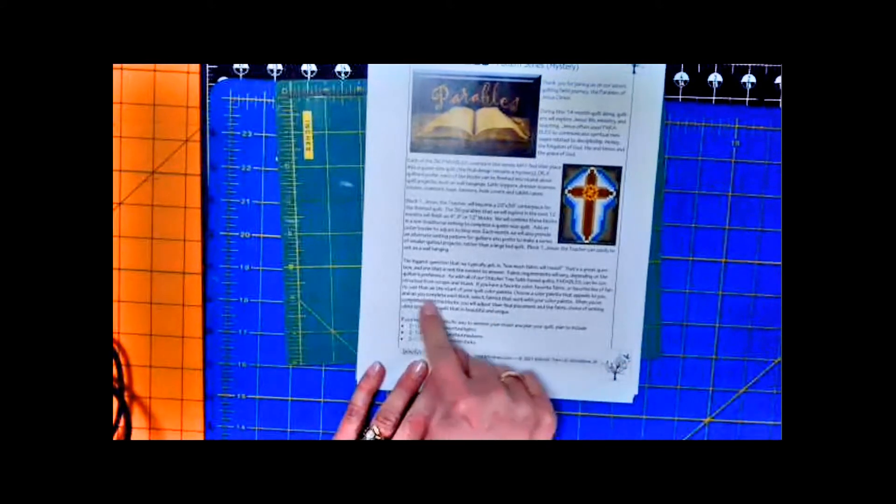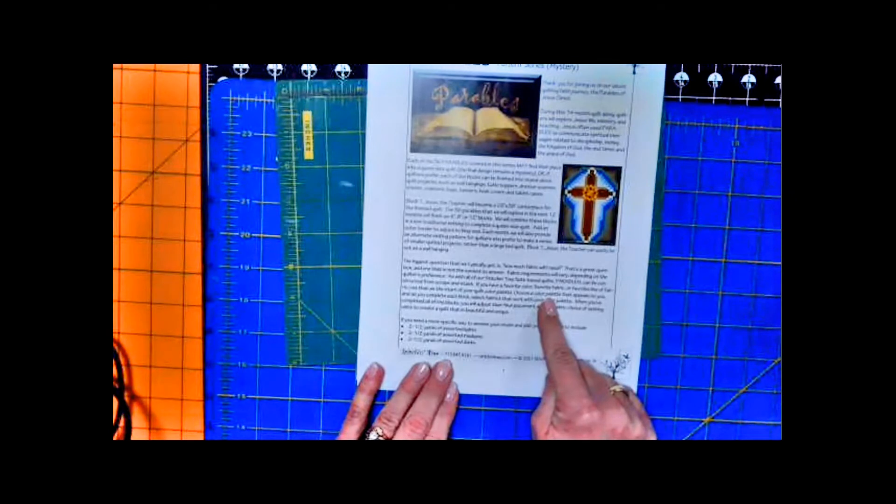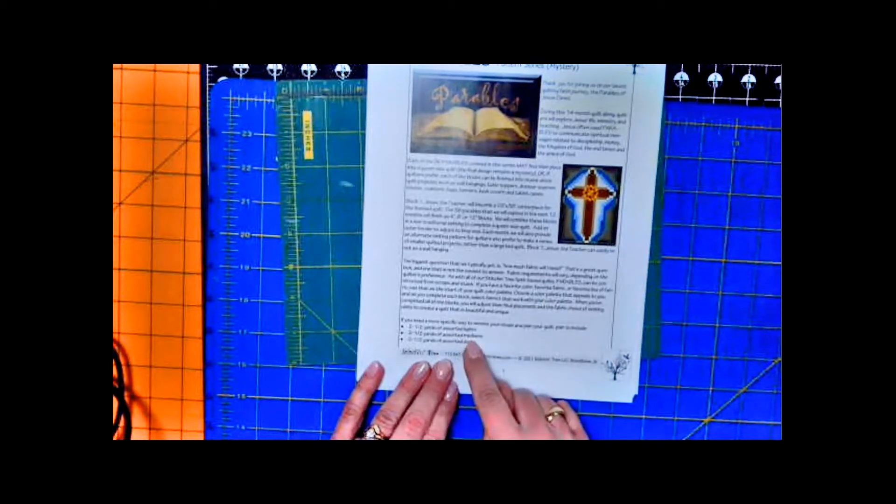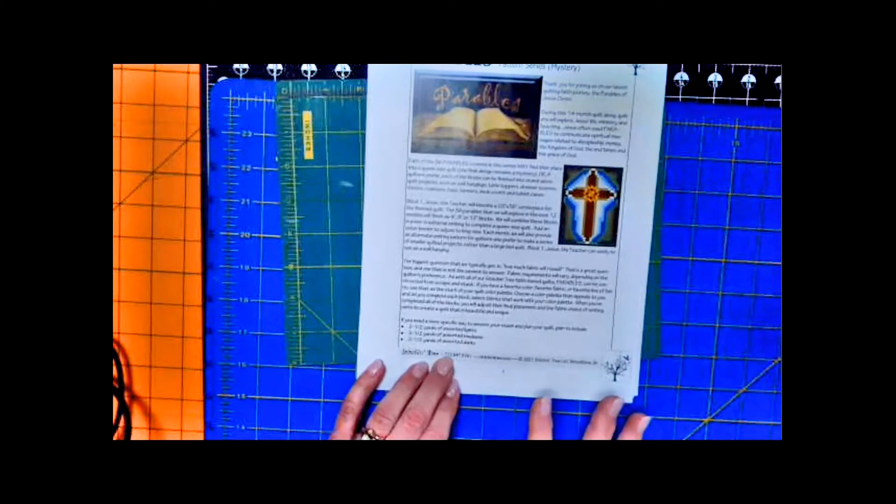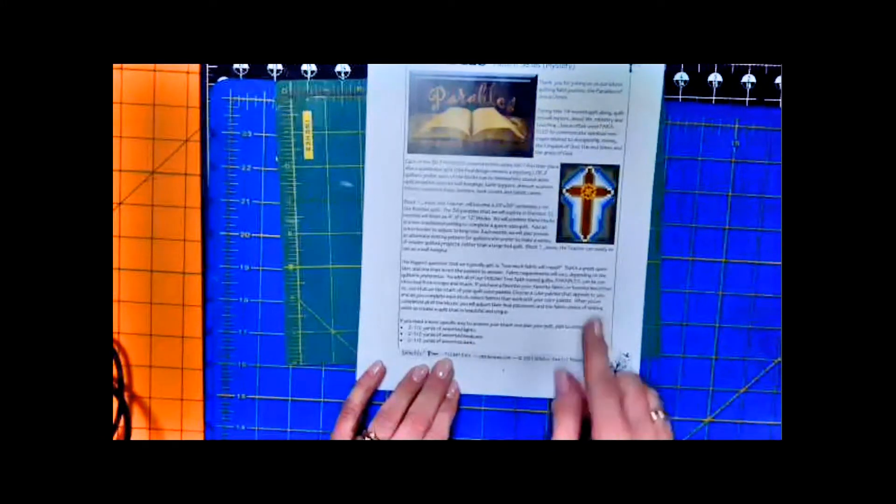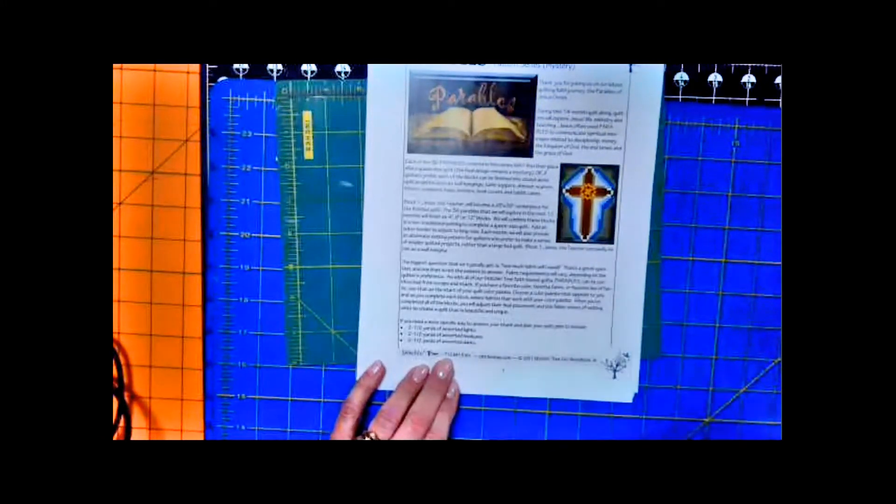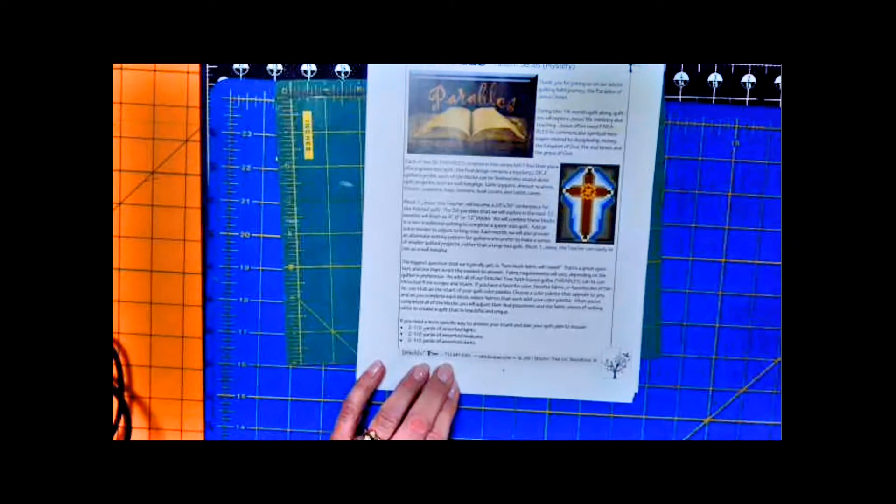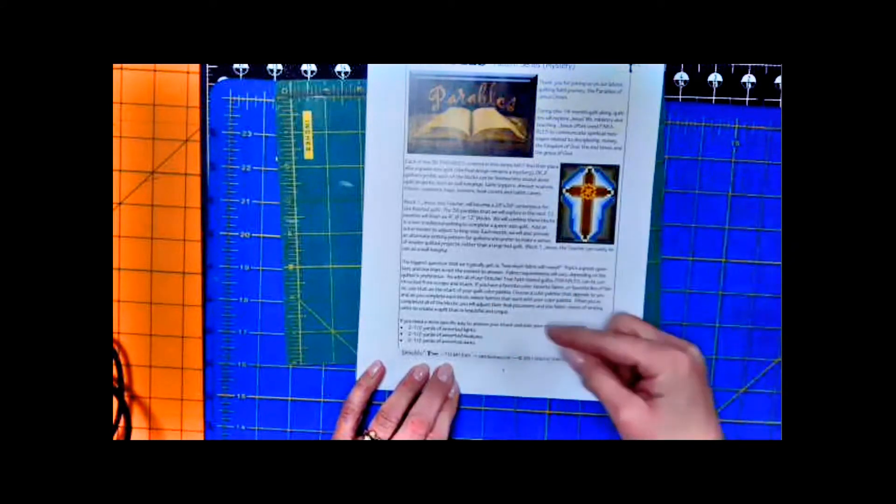You want to choose a color palette that appeals to you. Find a fabric that is the fabric that you want to use for the focus of your color palette, and then mix it up and choose lights, darks, and mediums. Now some people like to have all their background fabric always be the same. That's fine. You can do that.